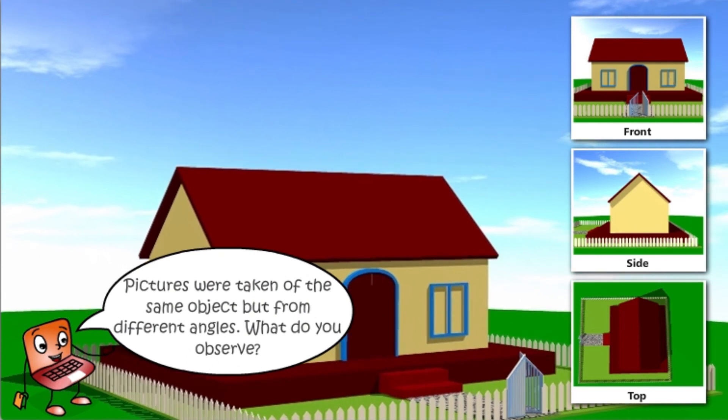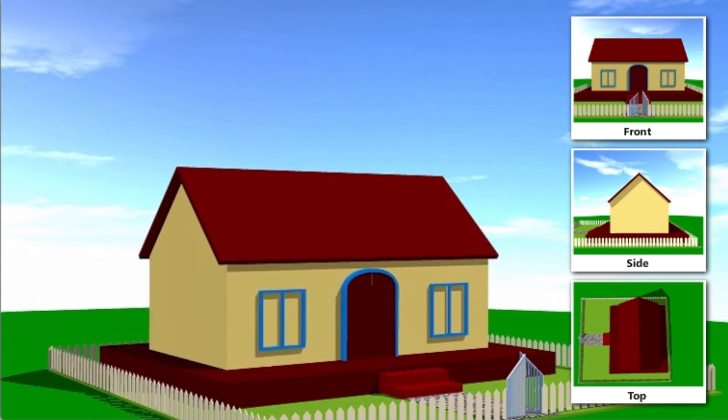Pictures were taken of the same object from different angles. What do you observe? Each picture gave a different view of the house depending on the angle.